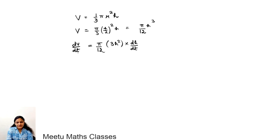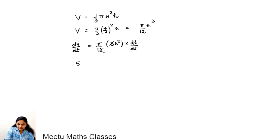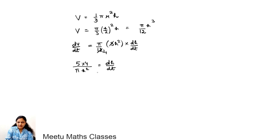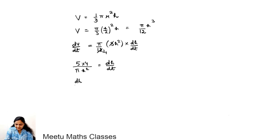We are given dV/dt = 5 m³ per hour. Substituting: 5 = (π/4)h²·(dh/dt), so dh/dt = 20/(πh²). We need to find dh/dt when h = 4 meters, so dh/dt = 20/(π × 4²) = 20/(16π) = 5/(4π).